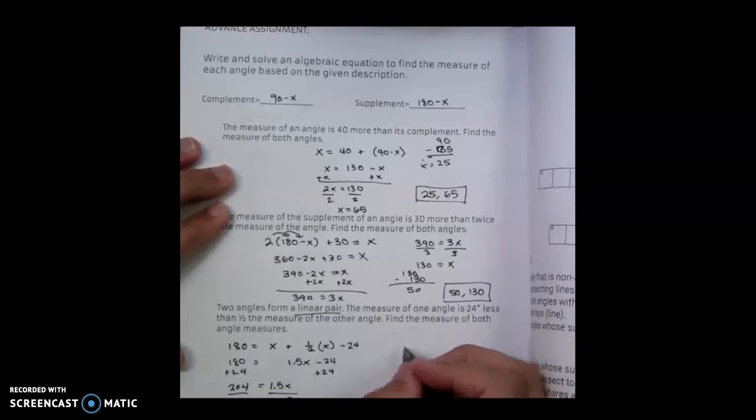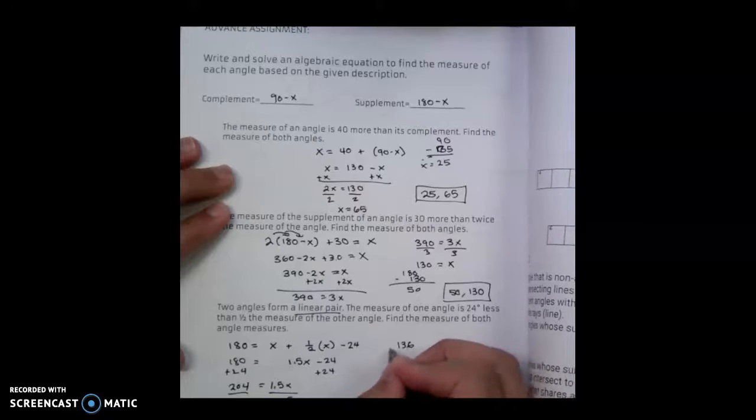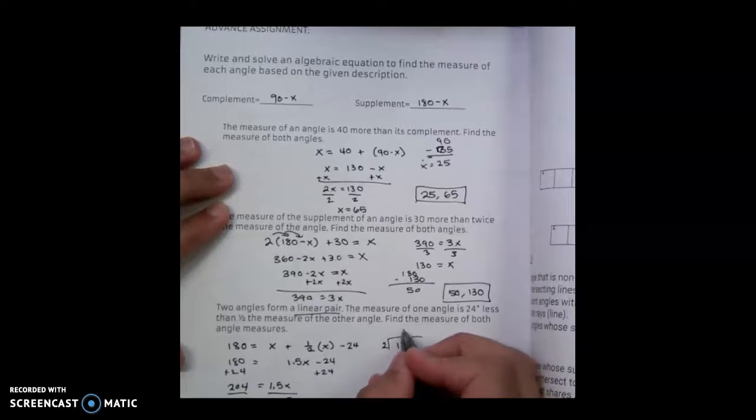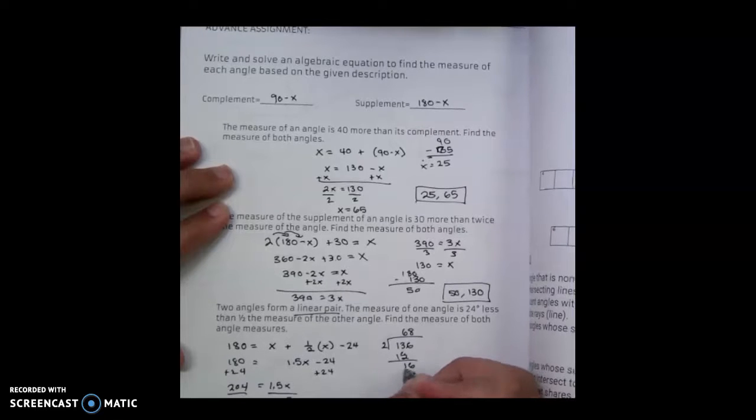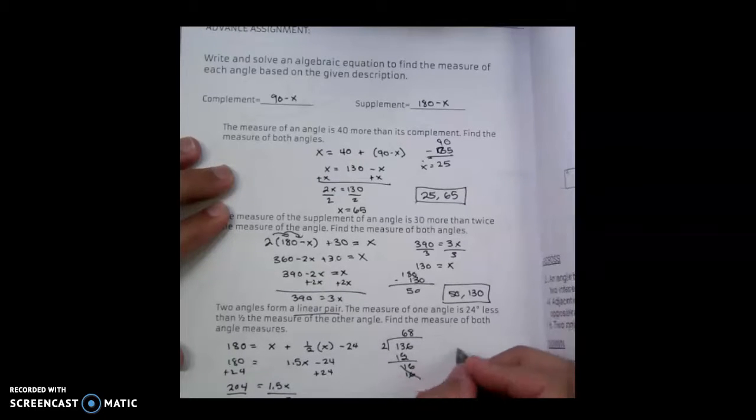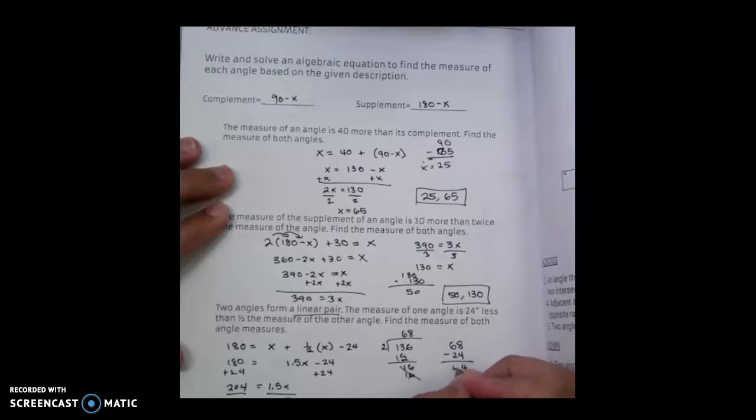Now if I take 136 and divide it by 2, so 136 divided by 2 to give me 68. Then I take 68 and subtract it by 24, and I end up with 44.